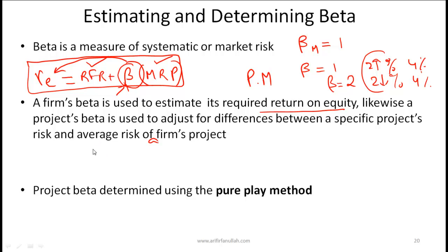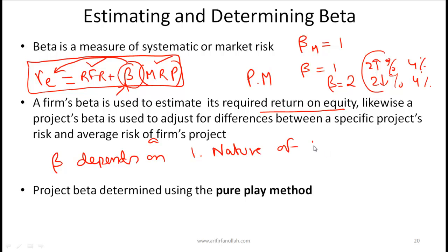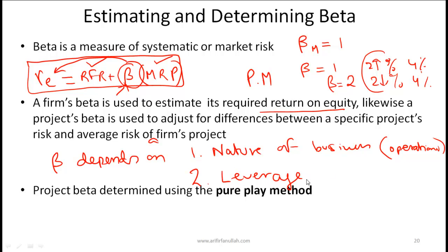Very simplistically, beta depends on two things. First, it depends on the nature of the business — some businesses are inherently more volatile and risky and will have a higher beta, while stable businesses will have a low beta; you can think of this as the operational contribution. Second, beta depends on leverage: the higher the leverage, the higher the risk, and hence the higher the beta.